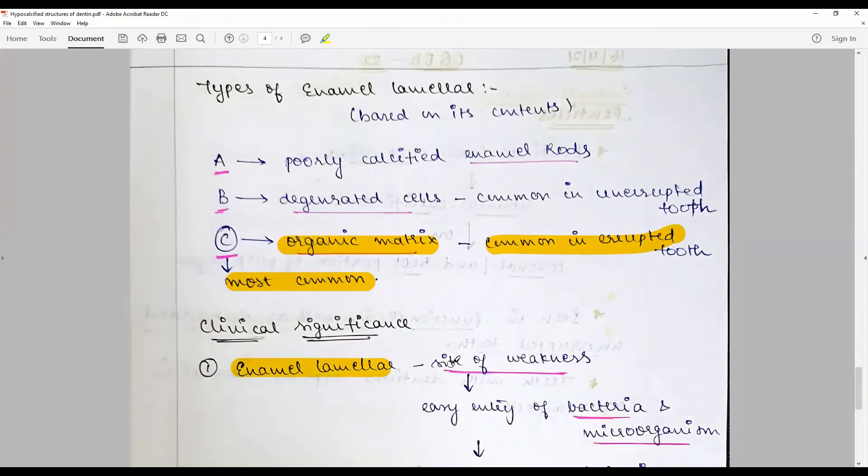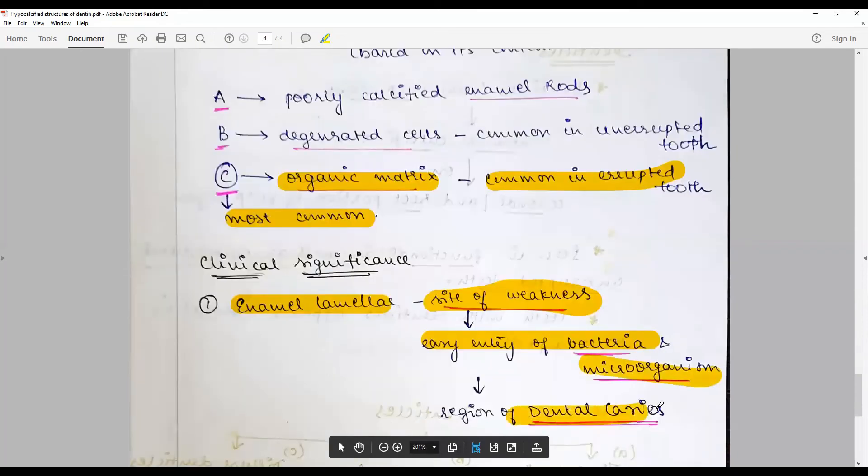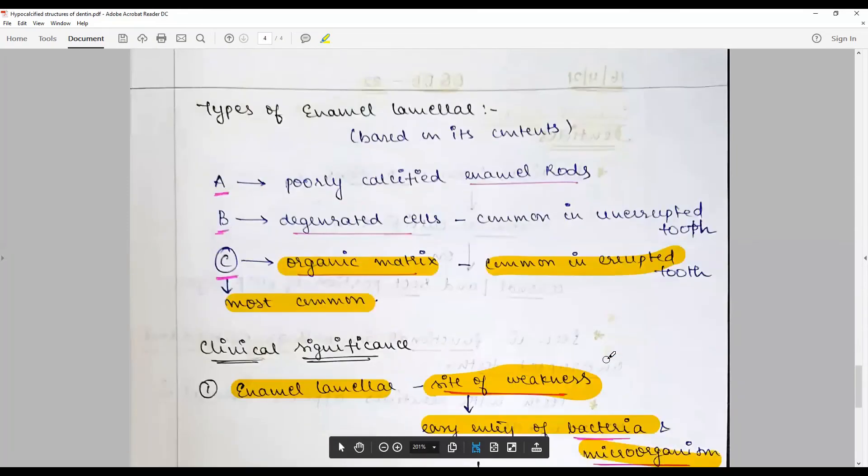The clinical significance comes from mostly this enamel lamellae. They are the site of weakness and easy portal of entry of bacteria and microorganisms, hence are predisposed to caries.